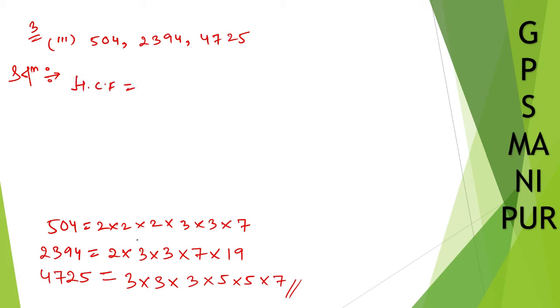So, HCF. You take the common numbers. 2 is common here but not here, so 2 is gone. Let us take 3. There is one 3 which is common. Another 3 is also common. No more 3s are common to all these 3 numbers. 7 is common to all 3. 5 is only here, not common to these 3 numbers. So, 3 into 3 into 7. 3 times 3 is 9, times 7 is 63. This is your HCF.